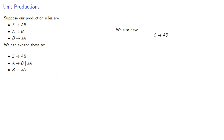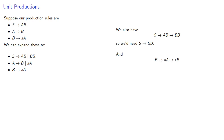We also have S produces AB and A produces B, so that gives us BB, so we need S produces BB. And B produces AA, which produces AB, so we need the rule B produces AB. And so our new production rules will be derived accordingly.